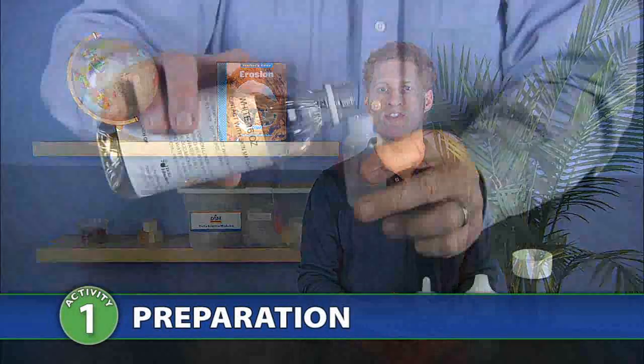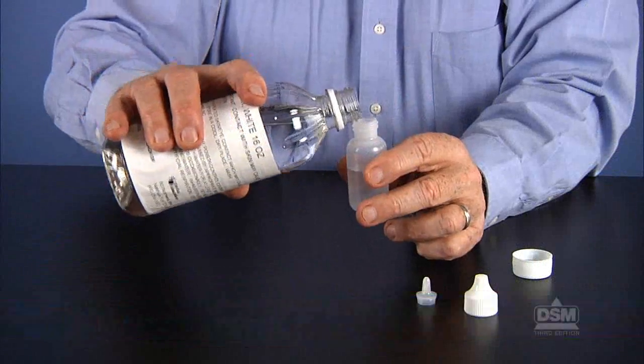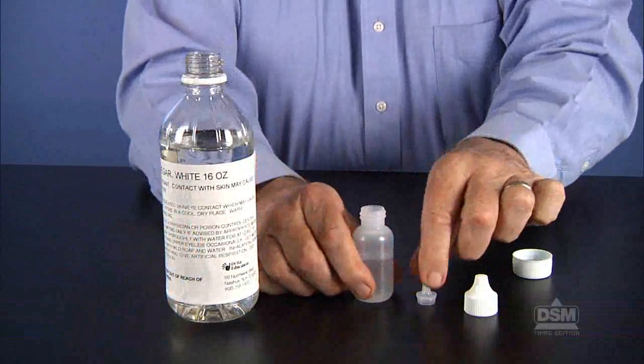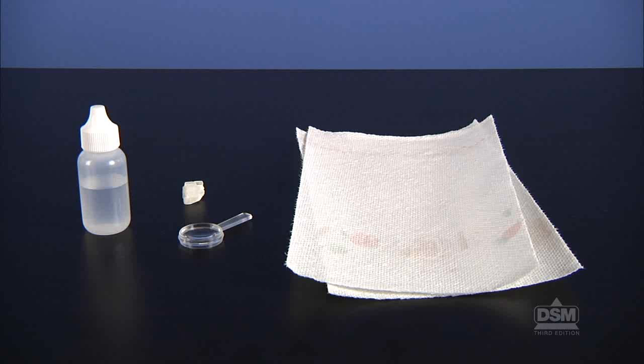To prepare for Session 2, fill each dropper bottle half full with vinegar, attach the tip, and screw on the cap. Each team of four will need a dropper bottle with vinegar, a calcite chip, a magnifier, and some paper towels.